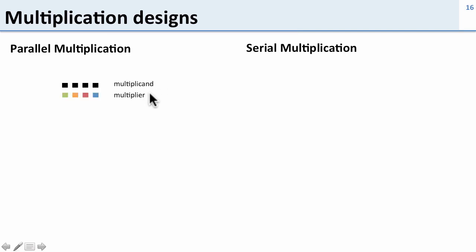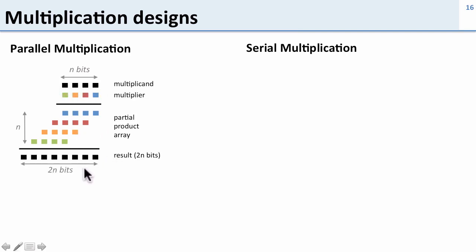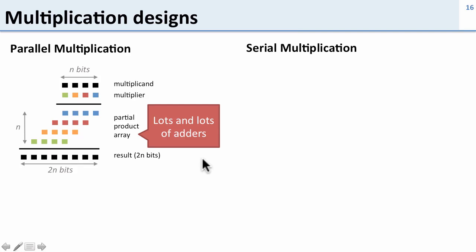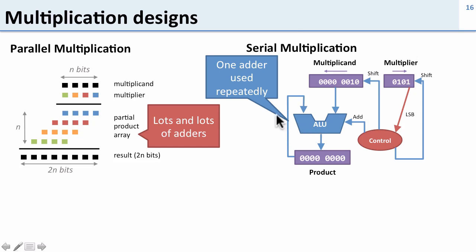Now let's take a look at how we design multipliers. There are two ways to do this — parallel multiplication or serial multiplication. In parallel multiplication we have the multiplicand and the multiplier as inputs, these are n bits wide. We go ahead and do all these partial products — each one just takes one bit, either 1 or 0, multiplied by this, all shifted together and added up to get our result. As you can see there are lots of adders — all of these things have to be added up together. The other way is serial multiplication. Here we have one adder which takes our multiplicand and our multiplier and they're just shifted around and added up. So here we have one adder but we have to use it over and over again, versus parallel where we have lots of adders but only need to use them once.